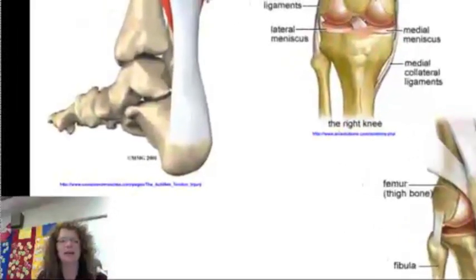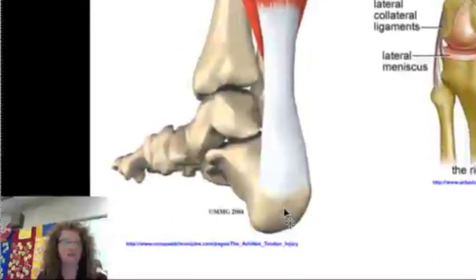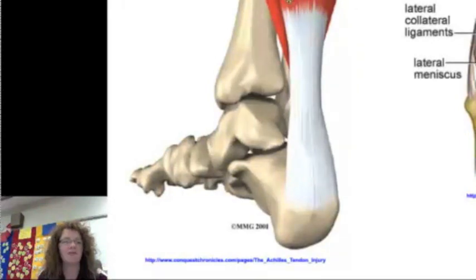Tendons, as you see here, connect muscles to bones. Here you see the gastrocnemius, the calf muscle, being connected to the calcaneus.